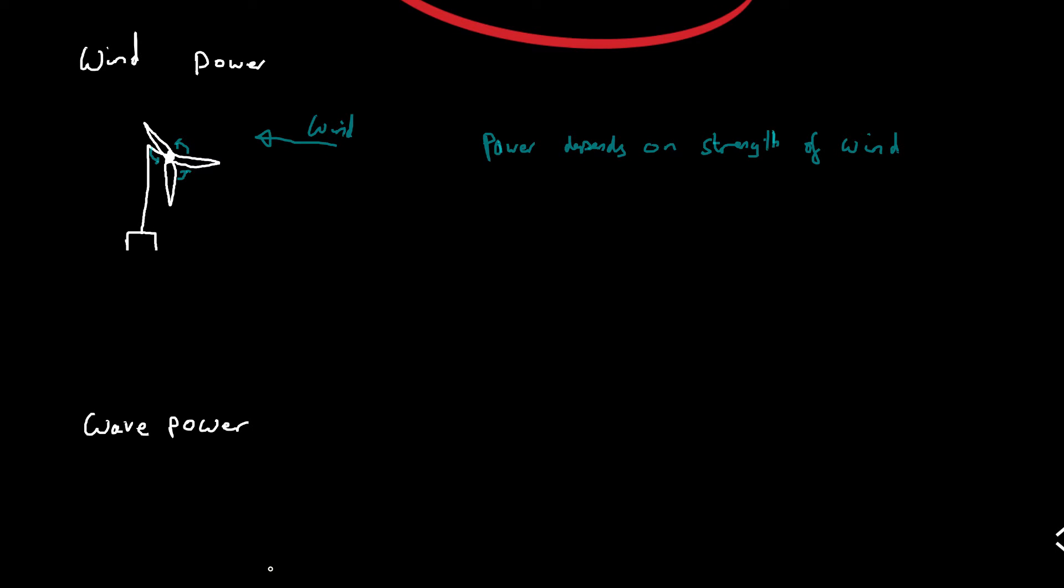Now wave power obviously uses waves in the ocean in order to generate electricity. And what we have is what is known as a wave generator. Now this is not a machine which is going to generate waves. It is a generator which is using the energy from waves in order to convert it into electricity. And so these wave generators might look something like this. We've got the waves coming in this direction. So this is in the ocean. And basically what's happening here is you have this tube.